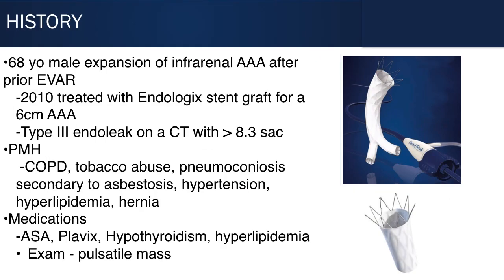A 68-year-old man who had massive expansion of an infrarenal aneurysm. He had a prior EVAR and was treated with an endologix stent graft after a 6cm triple A. He also had an extension placed in the aortic position some variable time later, and had the usual comorbidities associated with patients with aneurysms.